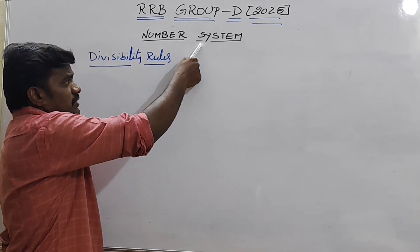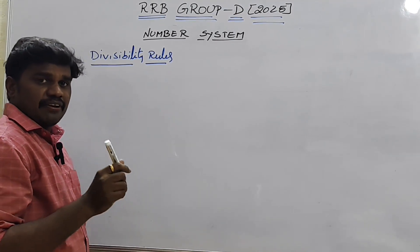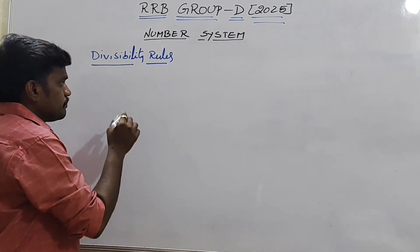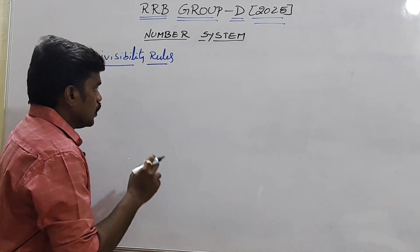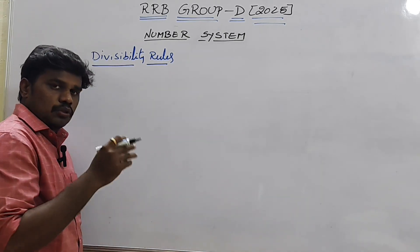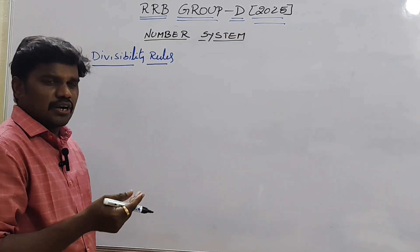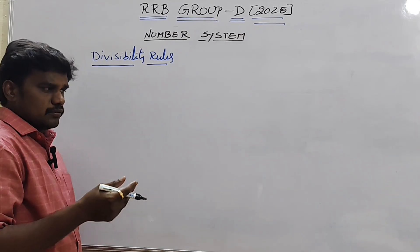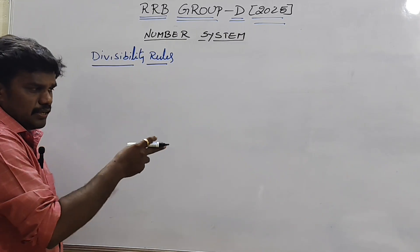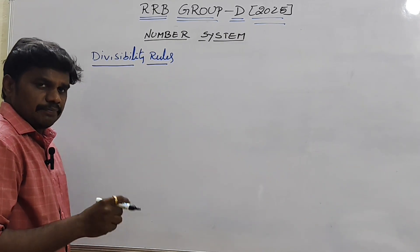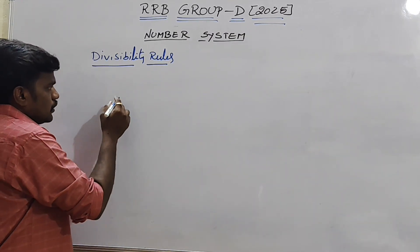In the number system, the last topic is divisibility rules — this is a very, very important topic. There are 9 rules: rule 2, rule 3, rule 4 and so on up to rule 10. Rule 11 also exists but it is not required — till now no question has come from rule number 11.